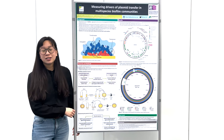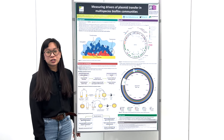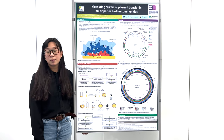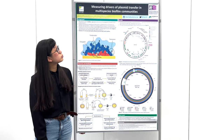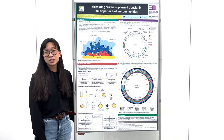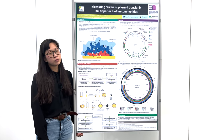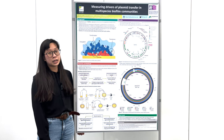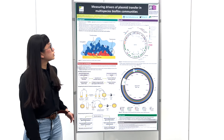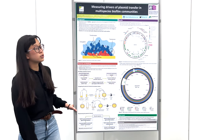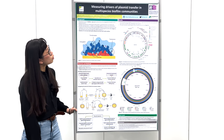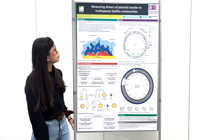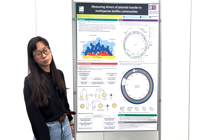Most bacteria exist in biofilms, aggregated communities of microorganisms encased in a self-produced matrix, and owing to various protective characteristics of the matrix, these biofilms often exhibit intrinsic resistance to many antimicrobials. As well as these intrinsic AMR properties, horizontal gene transfer can also contribute to the spread of high-level AMR within biofilms.